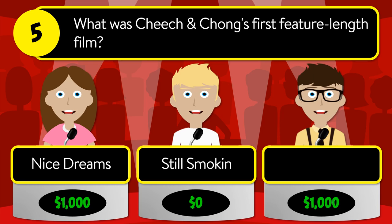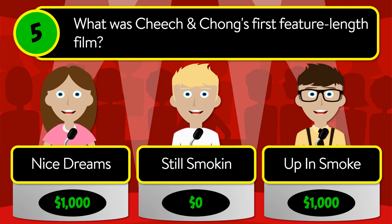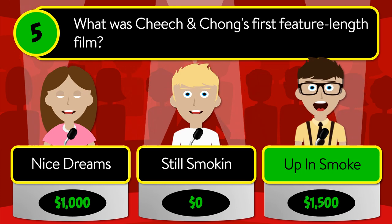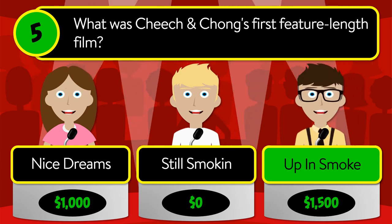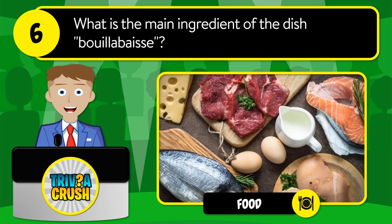Question number five: what was Cheech and Chong's first feature-length film? Was it Nice Dreams, Still Smokin, or Up in Smoke? The correct answer is Up in Smoke.